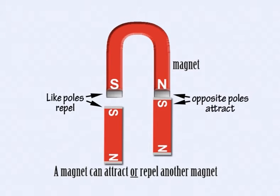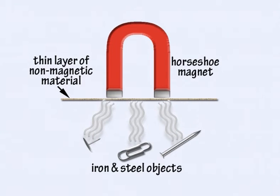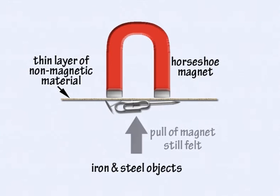The force of magnetism can work through a variety of non-magnetic materials such as paper, fabric, aluminium foil and plastic.